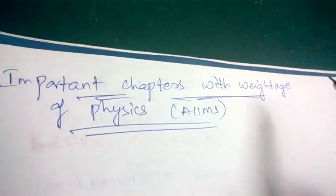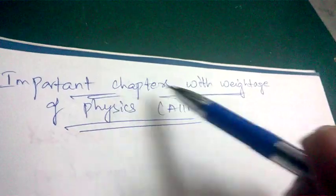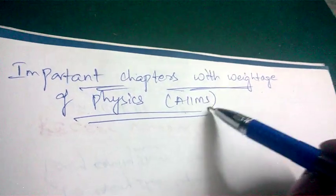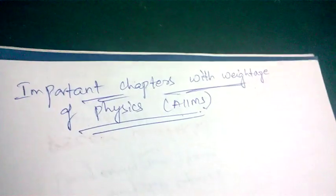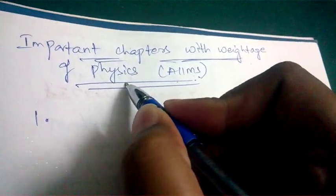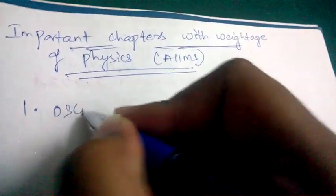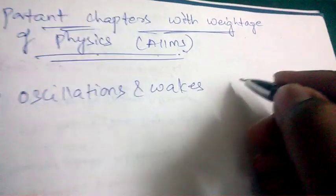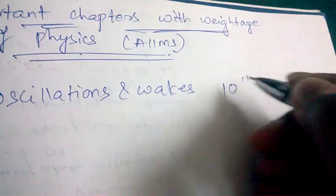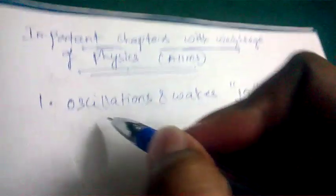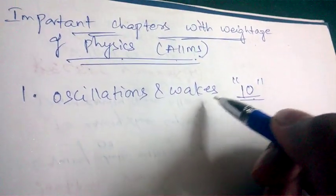Hello friends, welcome back to Best Way to Study. In this video we are going to discuss a few important topics along with their weightage for the physics subject for the AIMS exam. The most important physics chapter is Oscillations and Waves, which has the highest weightage — 10% of the whole physics question paper will appear from this chapter.